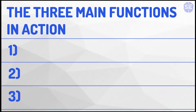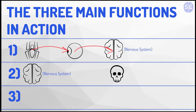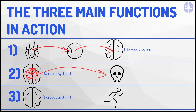Now let's see the three basic functions in action. First, receiving the sensory information — the spider is seen by your eye, and the eye sends the sensory information to your brain for processing. Number two, processing the information — the brain processes the information, identifies it as a spider, and sees it as dangerous, a threat to our survival. Number three, coordinating a response — the brain says we've got to run away because it's a dangerous spider. You might not always run away; you might sit there and do nothing, or you might try to kill the spider. But whatever you decide to do, it's because the nervous system decided to coordinate that response.